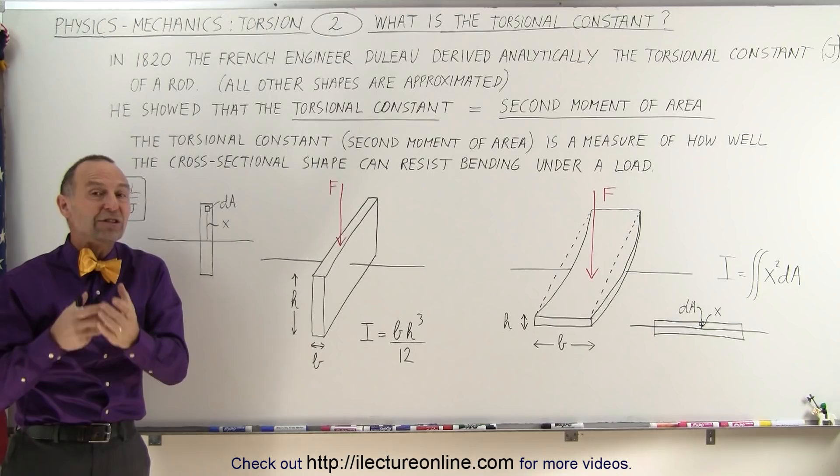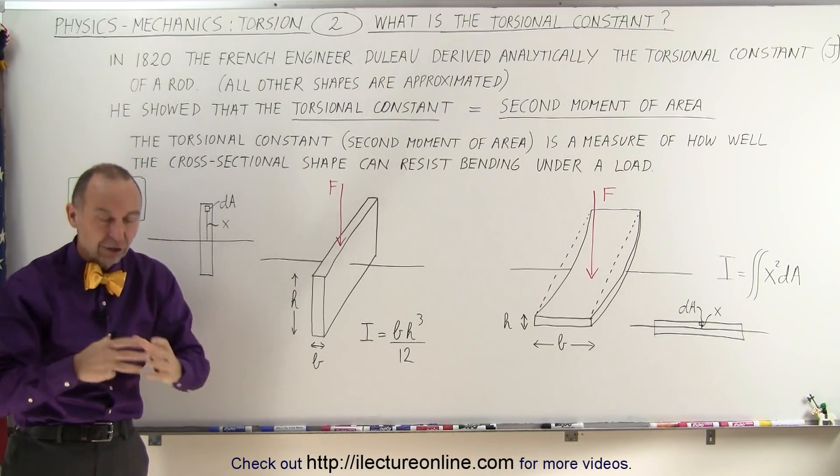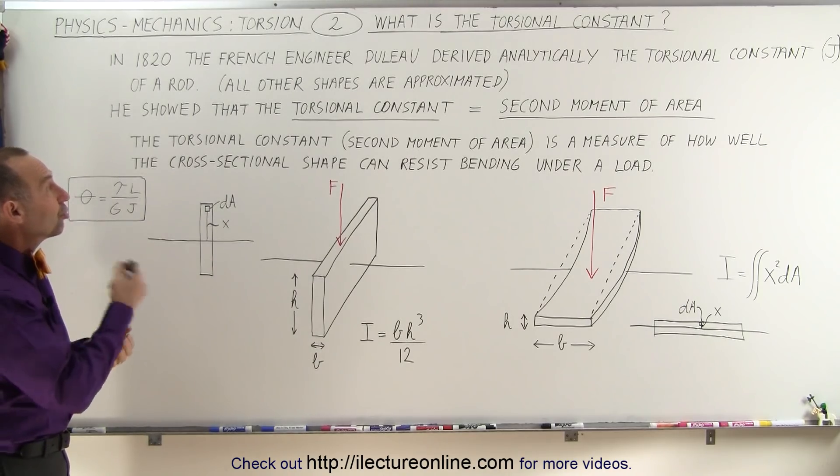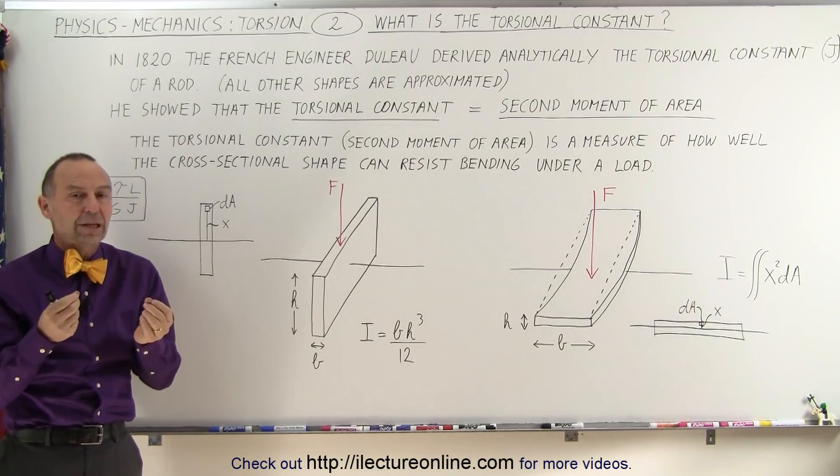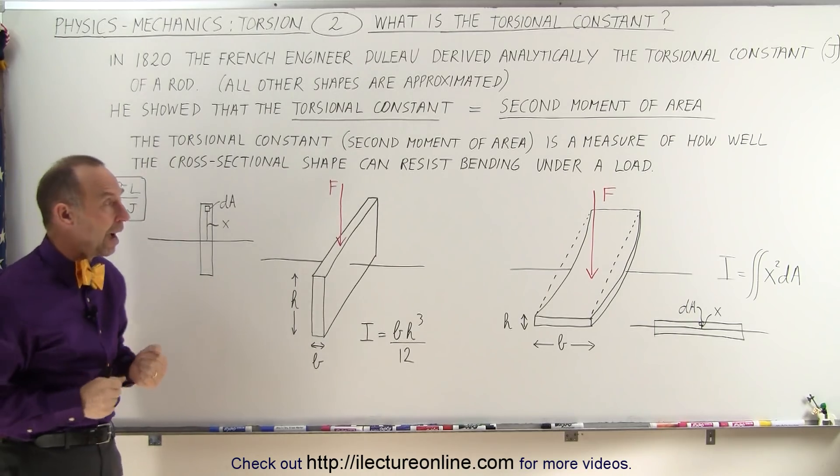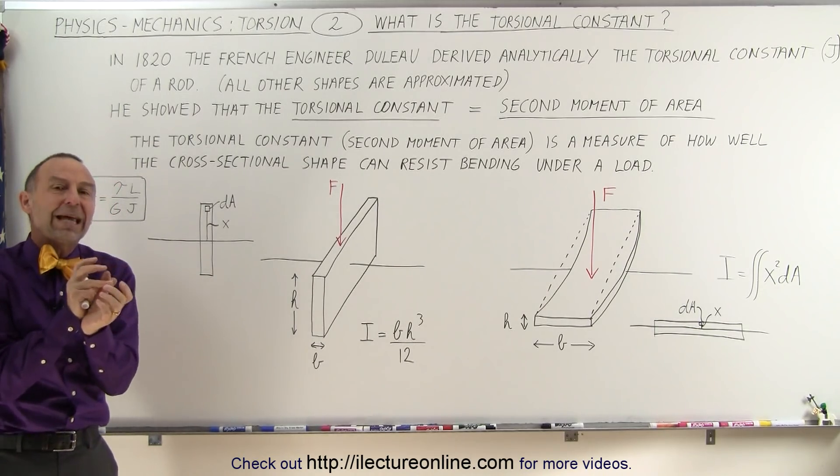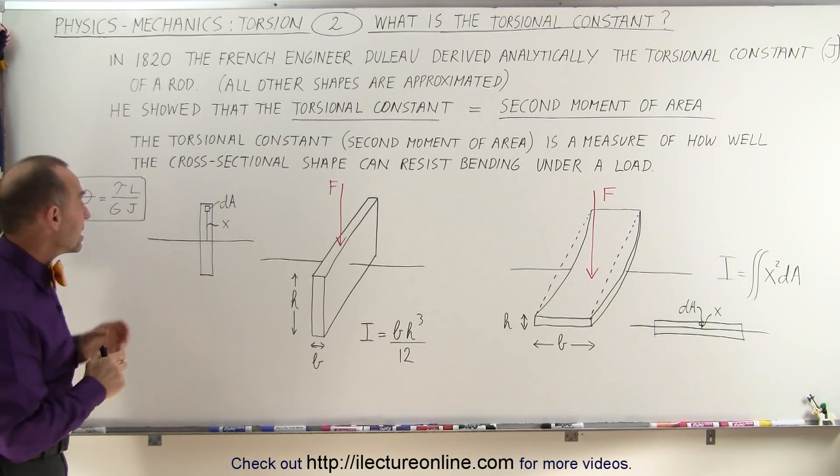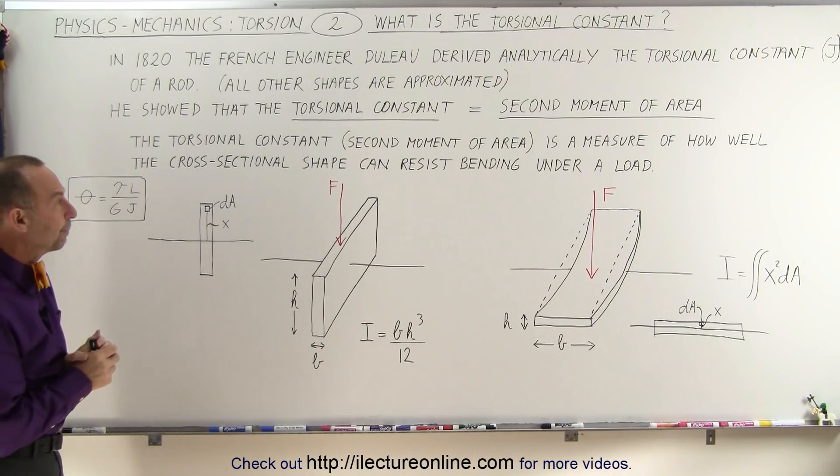It turns out that's the only shape, a cylindrical rod, for which we can actually derive that analytically. All other shapes are approximated. We could still use the same mathematical technique to derive it, and we'll show you later how. But the result that we get isn't actually what we measure when we try to measure the twist angle relative to the torque and so forth.